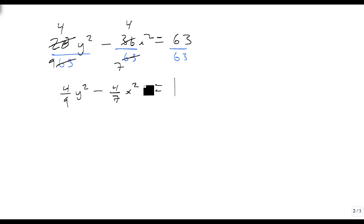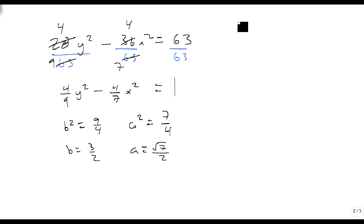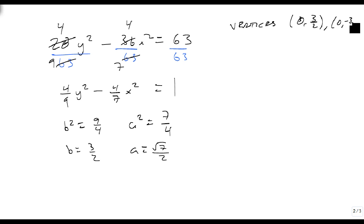So our b squared, which comes from the y term, is 9/4, and our a squared is 7/4. Now that we know b squared and a squared, we take their square roots — remembering we always take the positives — so b is 3/2 and a is √7/2. The vertices are on the y-axis, so the vertices are at (0, 3/2) and (0, -3/2).